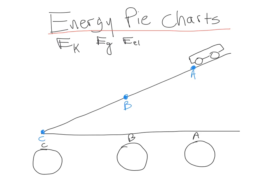As you look at the car at location A, and as you look at our three kinds of energy — kinetic, gravitational, and elastic — the question would be, what does the car have here? What kind of energy or energies do you think the car has? Is it just one, or does it have more than one type? Is it moving? Well, it's being released from rest at the top, so no, it's not moving because it's starting from rest.